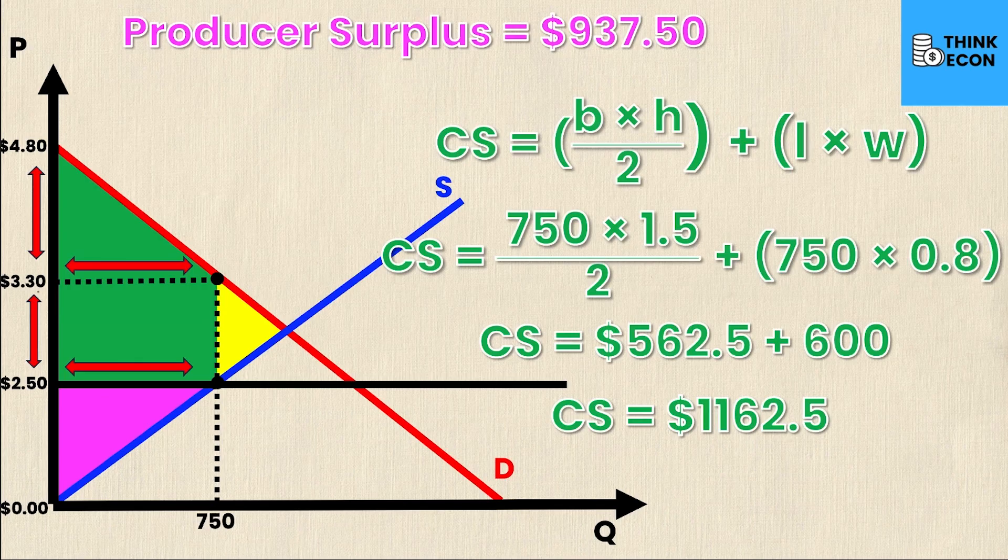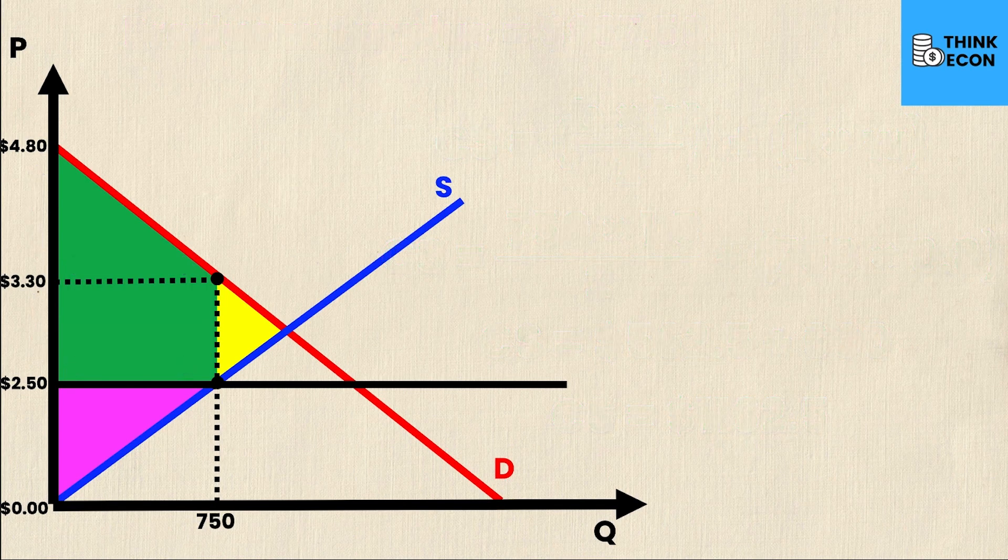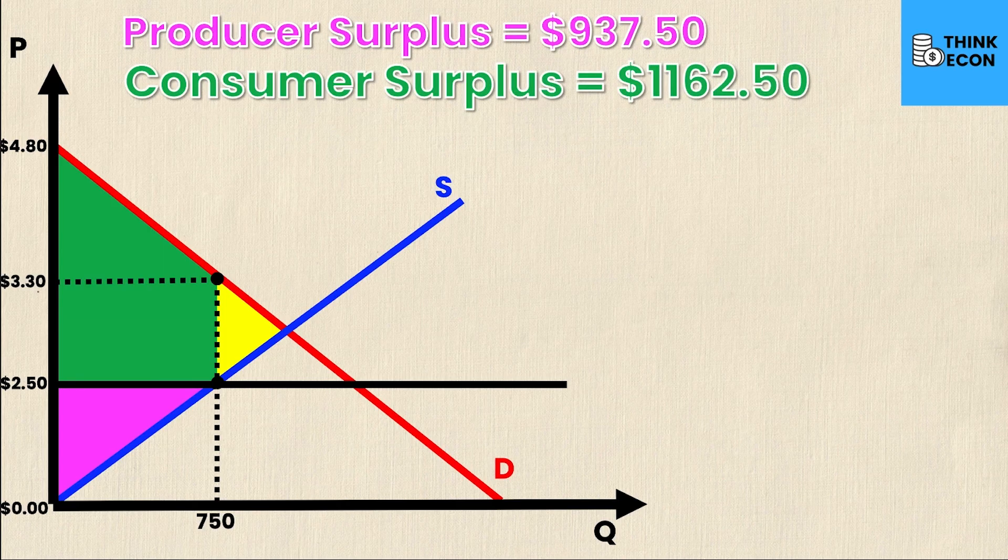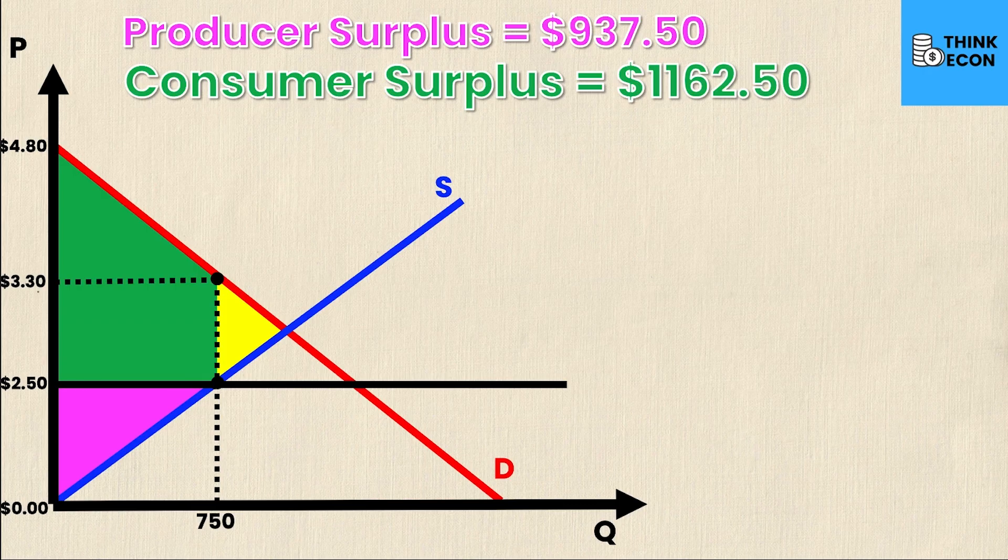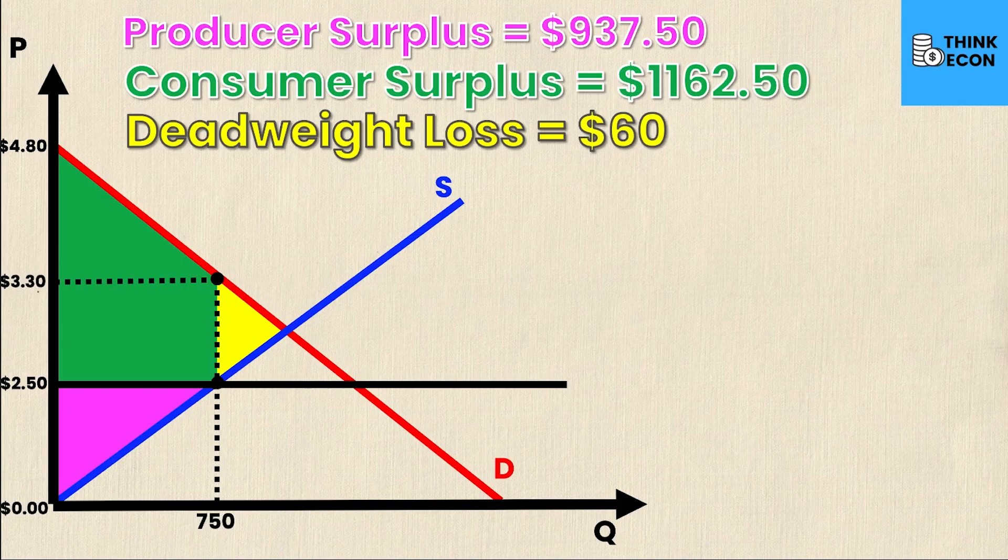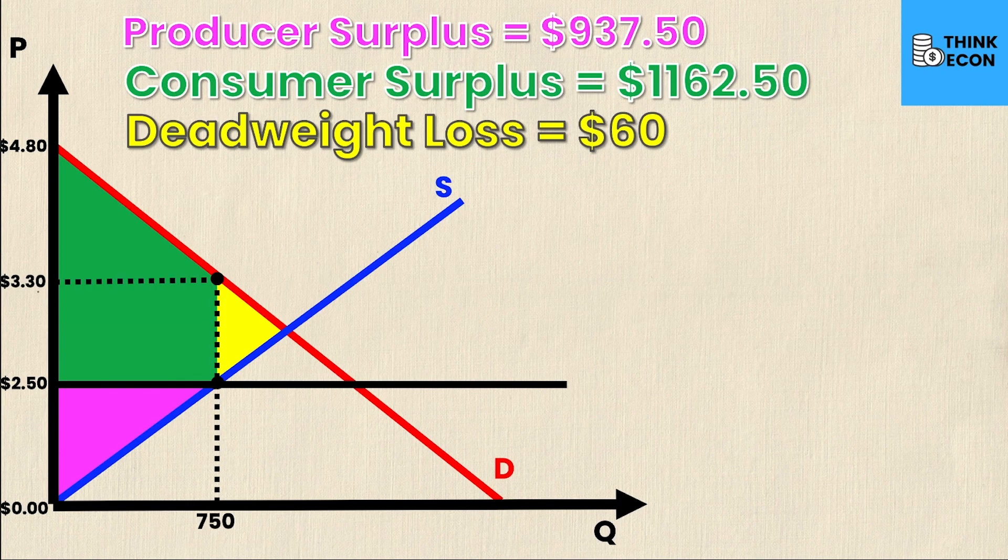To consolidate all of my known values: producer surplus equals $937.50, consumer surplus equals $1,162.50, and from part one deadweight loss equals $60, which is the total loss in producer and consumer surplus because we are not in equilibrium due to this price ceiling. If you want a part three showing how to calculate the magnitude of the loss in producer surplus and the loss or gain in consumer surplus, let us know.